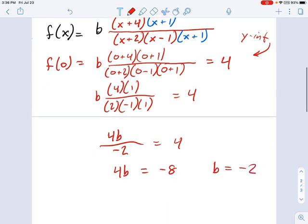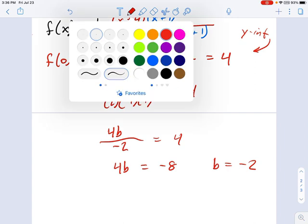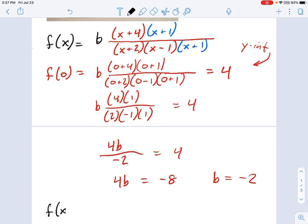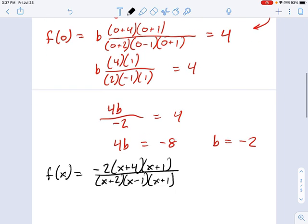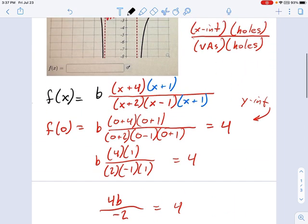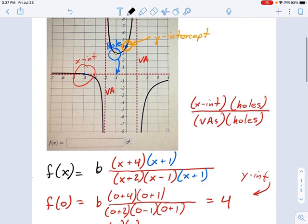So now I'm ready to write that equation. And I'm just going to do this looking at the top one. Okay. This is going to be f(x) equals negative 2 times x plus 4 times x plus 1, divided by x plus 2, x minus 1, x plus 1. So almost all the information we actually had very soon in the process. The last bit was just figuring out what the y-intercept was, or figuring out how to make the equation match the y-intercept that was in the graph.